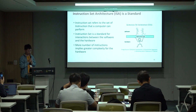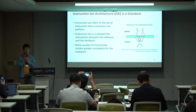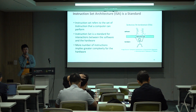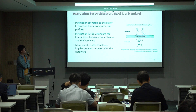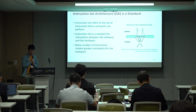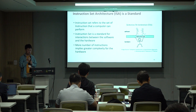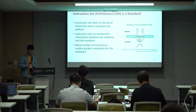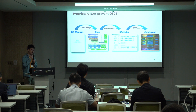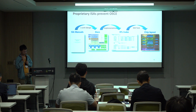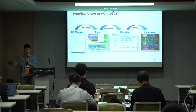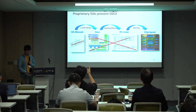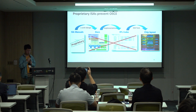Among the three levels of open source, the first level is the instruction set architecture — it is more like a standard, referring to the set of instructions a computer can perform, and a standard for interactions between software and hardware. We have seen that proprietary ISAs like x86 and ARM have prevented an open source chip ecosystem, because using ARM, you cannot even implement an open source CPU without being sued. They have prevented the open source chip ecosystem for the past 40 or 50 years.